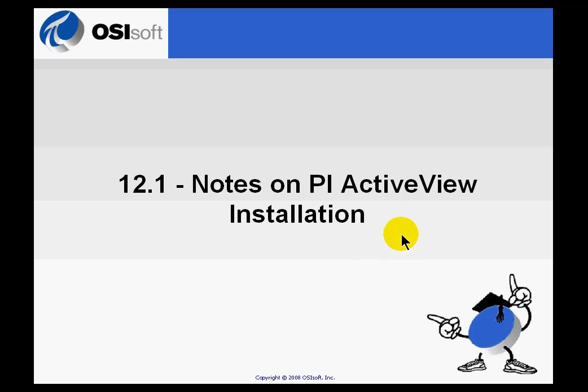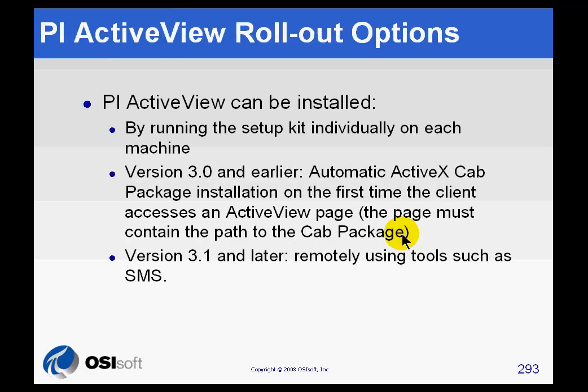As you try to roll out PI ActiveView, there are some notes you should keep in mind about the installation. ActiveView has to be installed on any of the clients that are going to be making use of the RT ActiveView web part. You can simply install the setup kit individually on each machine, going around each machine with a privileged user carrying a CD version or pointing to a network reference to do the install locally.